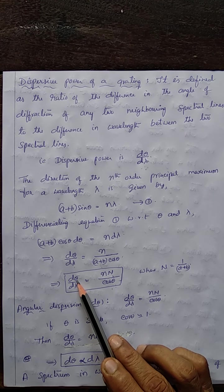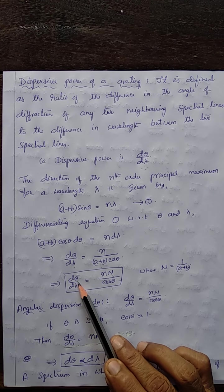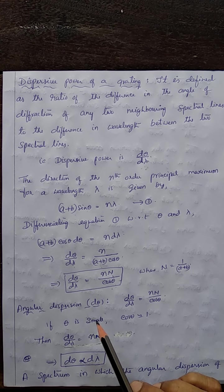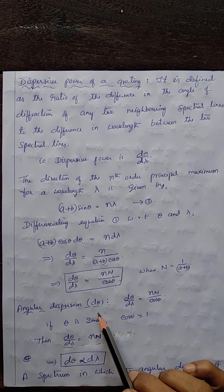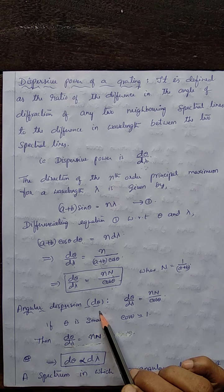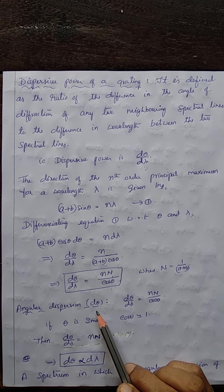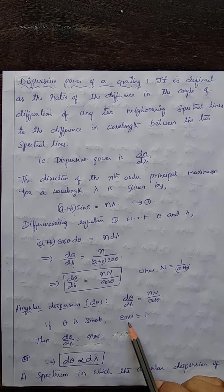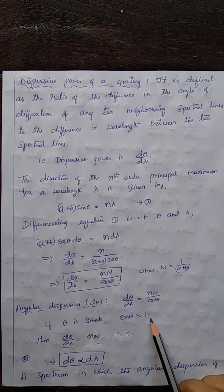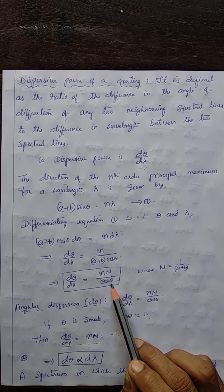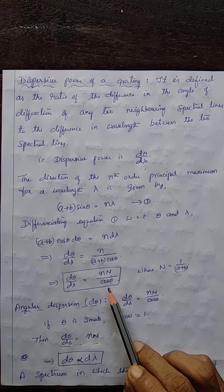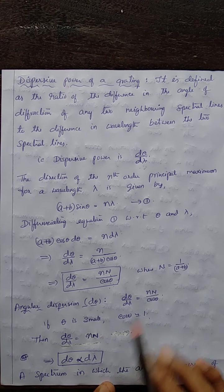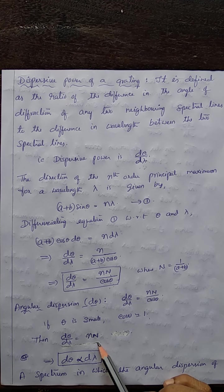Here, dθ is the difference in the angles of diffraction, also called angular dispersion. When θ is very small, cos θ can be approximated to 1, so that dθ/dλ = nN, where both n and N are constants.